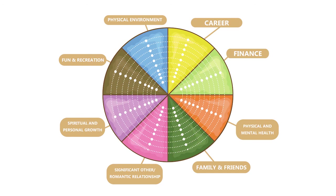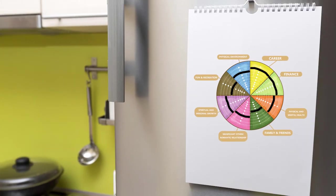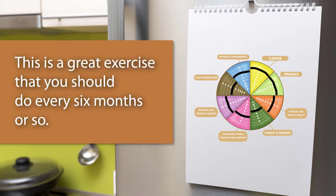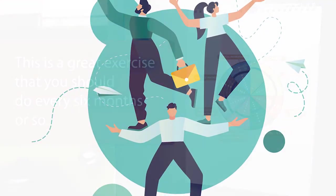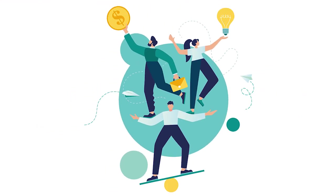One last note: it is best if you hang your Wheel of Life in your room, on your fridge, or someplace else where you can easily see it, so you can check on it often and remind yourself about where you should focus your attention. This is a great exercise that you should do every six months or so. Update your Wheel of Life so you can see where you have improved and where else you need to pay attention.